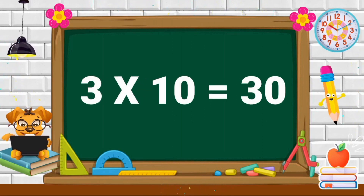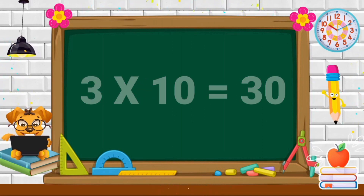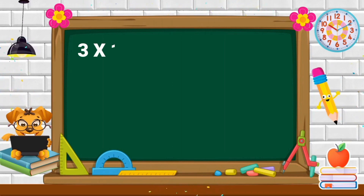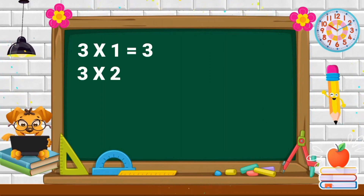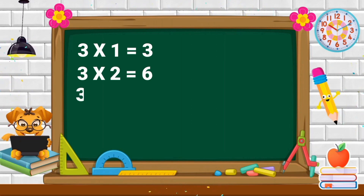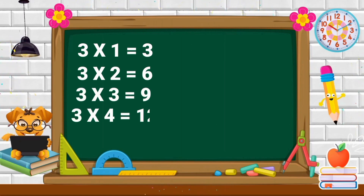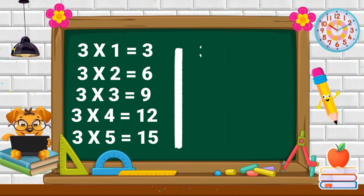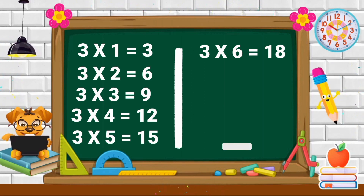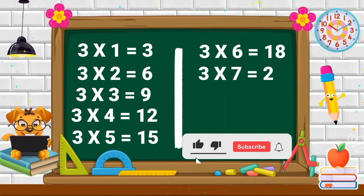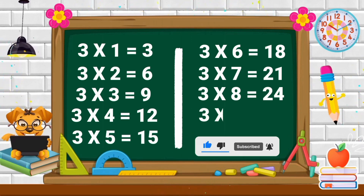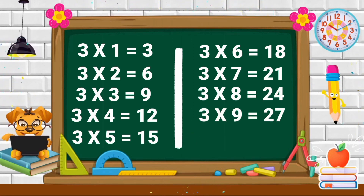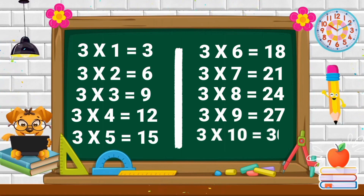Three tens are thirty. Repeat again. Three ones are three. Three twos are six. Three fives are fifteen. Three sixes are eighteen. Three sevens are twenty-one. Three eights are twenty-four. Three nines are twenty-seven. Three tens are thirty.